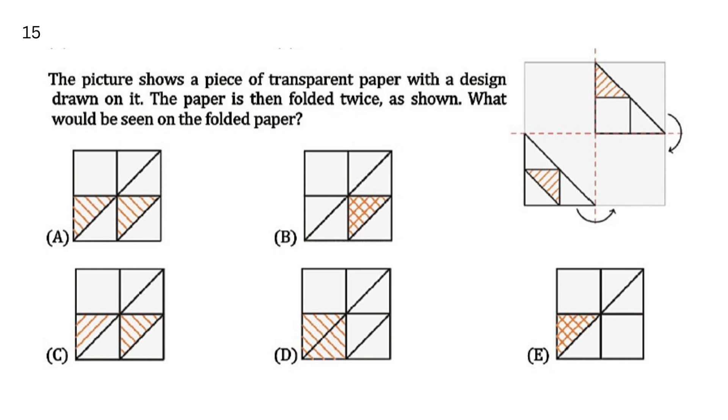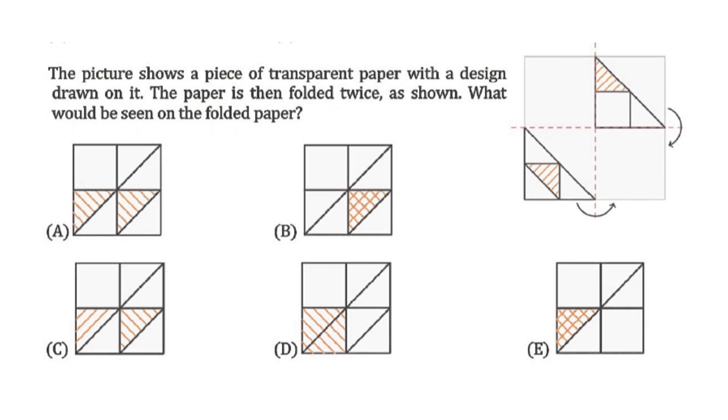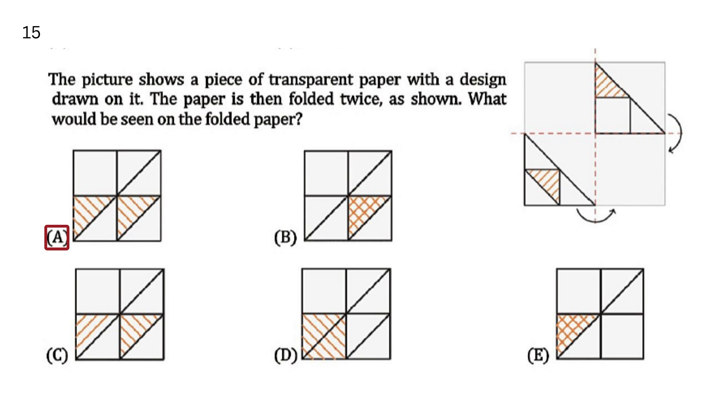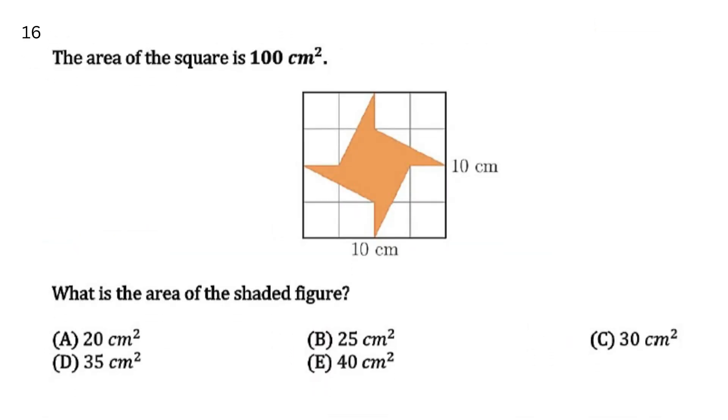The picture shows a piece of transparent paper with a design drawn on it. The paper is then folded twice as shown. What would be seen on the folded paper? जब हम इसको half fold करके दुबारा half fold करेंगे, तो हमारे पास दोनों lines वाले एक दूसरे के साथ आएंगे. And our answer is A.